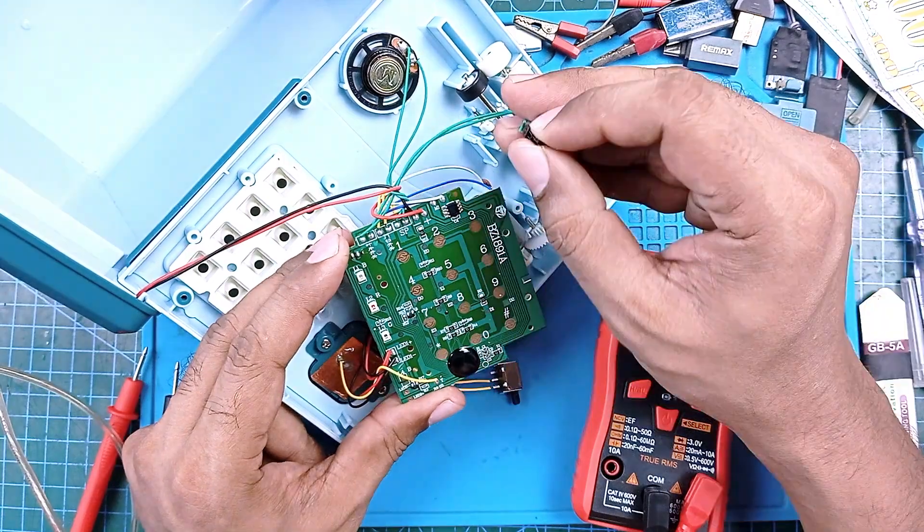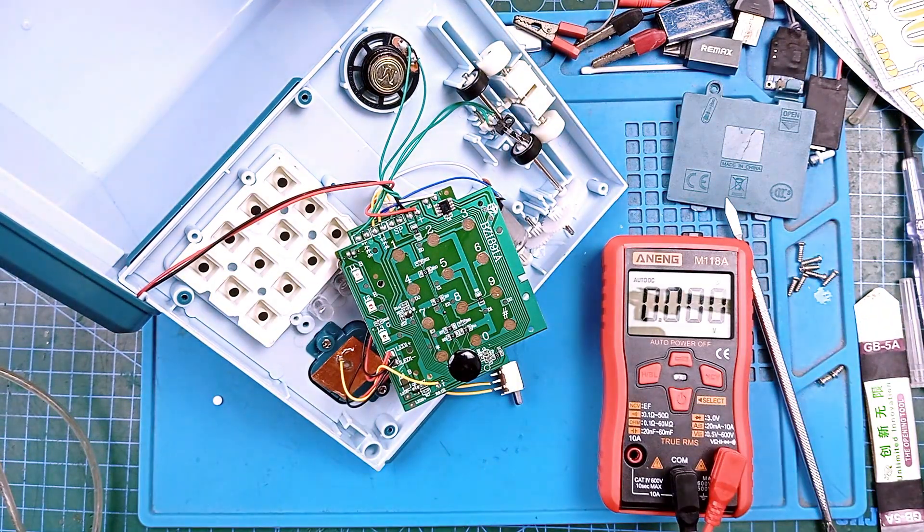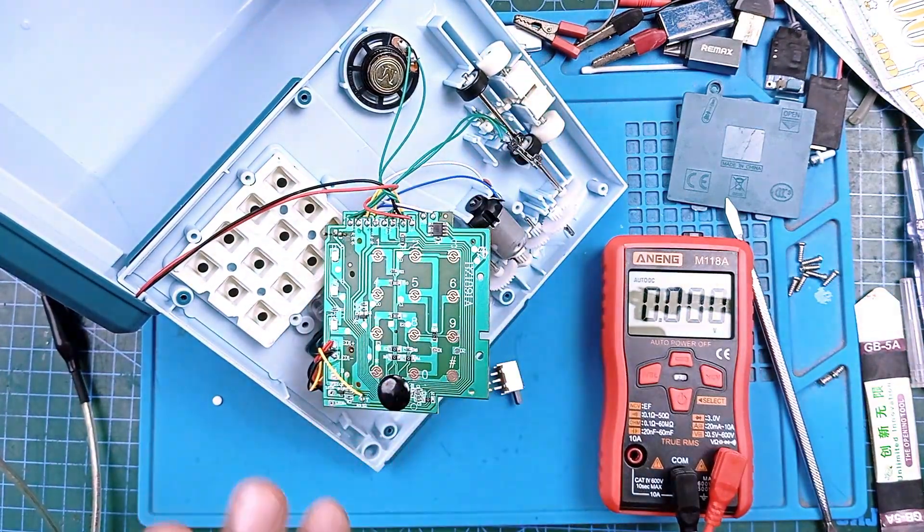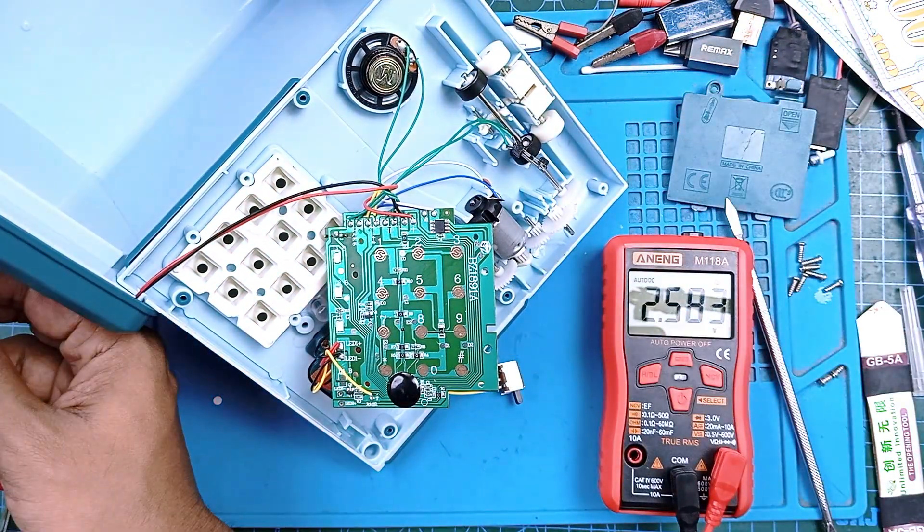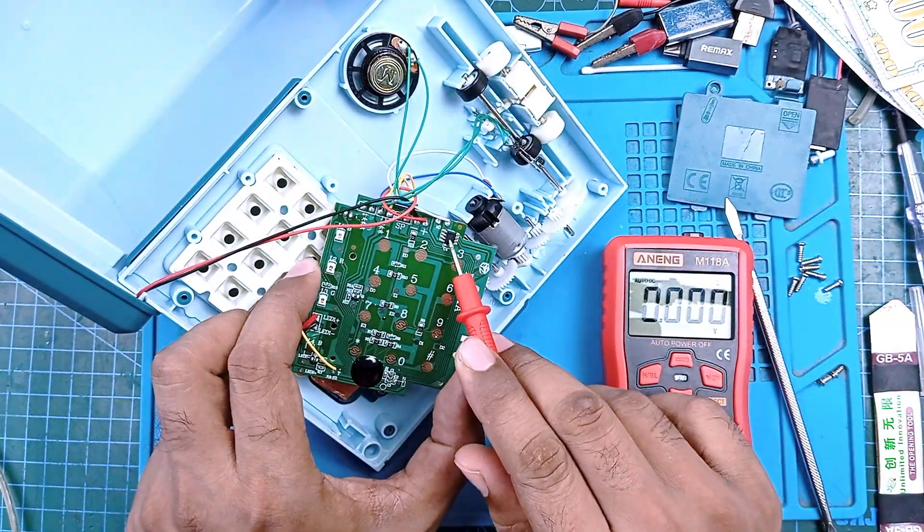Let's check it again. No it's completely dead, why? Check the input voltage, auto DC voltage. Suddenly it starts spinning, I don't know why. Multimeter shows proper voltage input but...